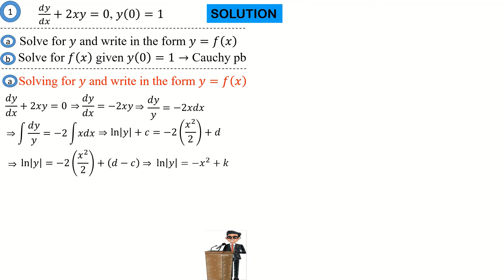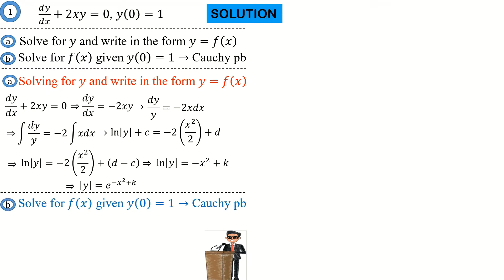Taking exponentials on both sides, the exponential of ln of the absolute value of y gives us the absolute value of y, and on the right-hand side we get e raised to the power of negative x squared plus k. Now in the second part, we are going to solve for f(x) given the initial condition.